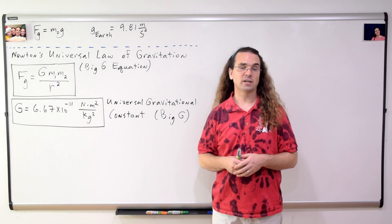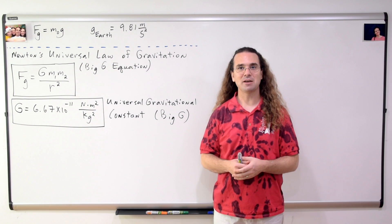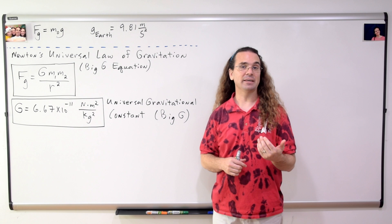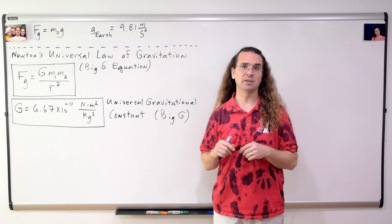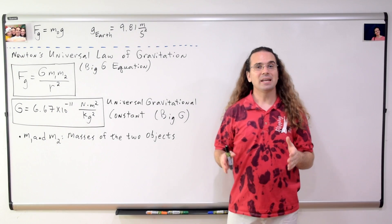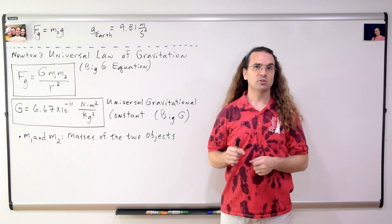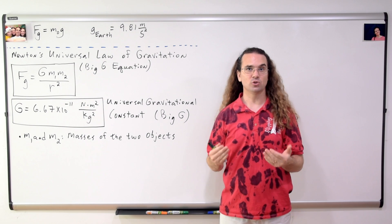The universal gravitational constant, or big G as I like to call it, is an experimentally measured number and has an accepted value of 6.67 times 10 to the negative 11 newtons times meters squared over kilograms squared. Mass 1 and mass 2 are the masses of the two objects which have the force of gravitational attraction between the two of them.